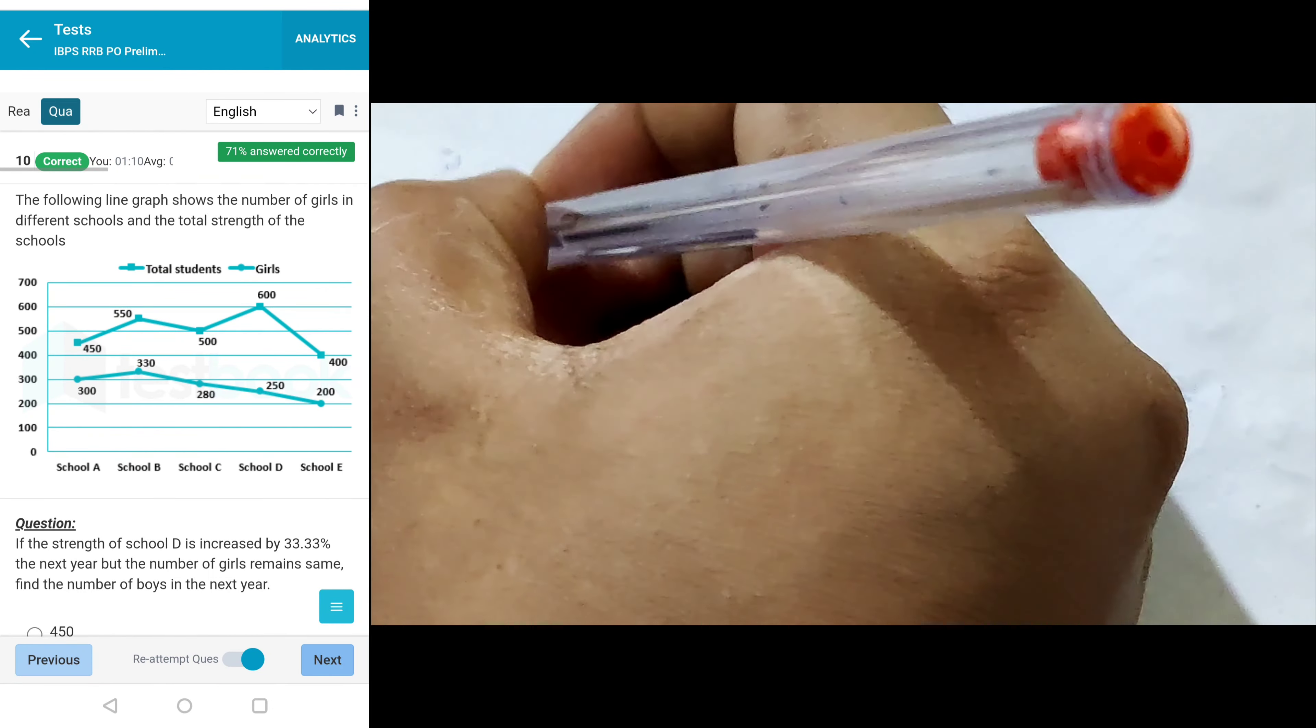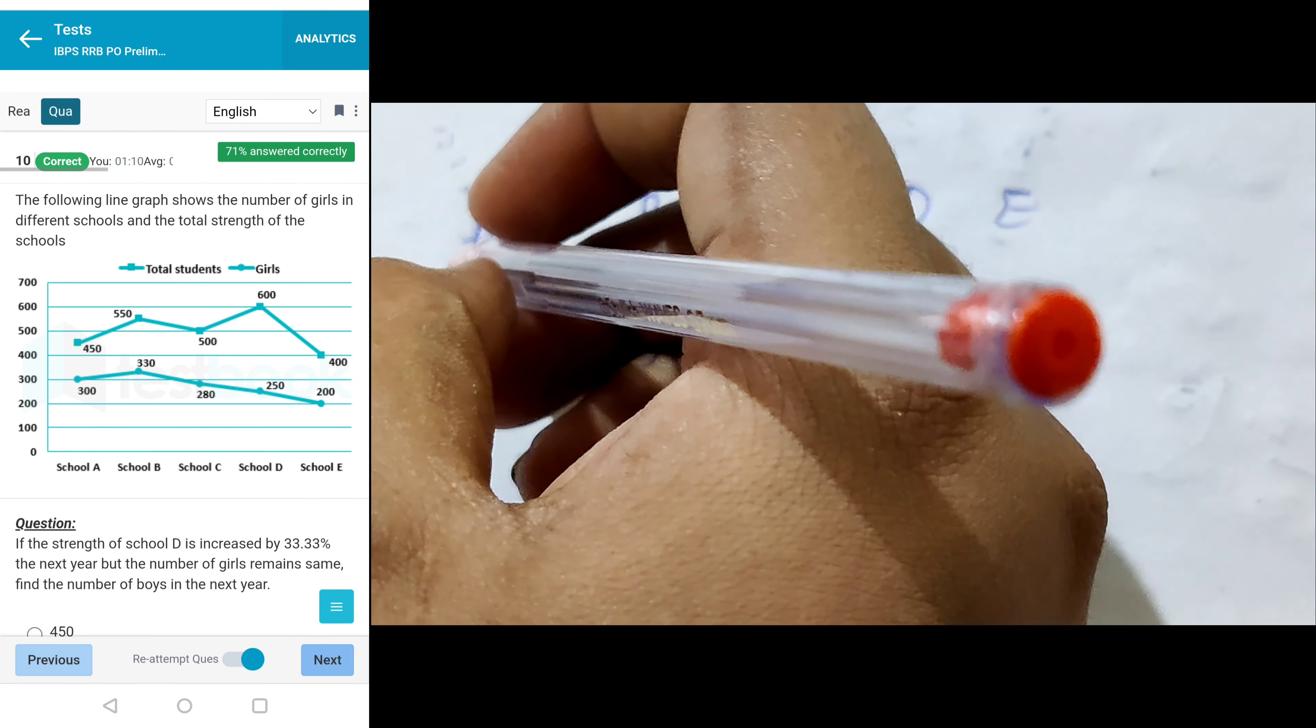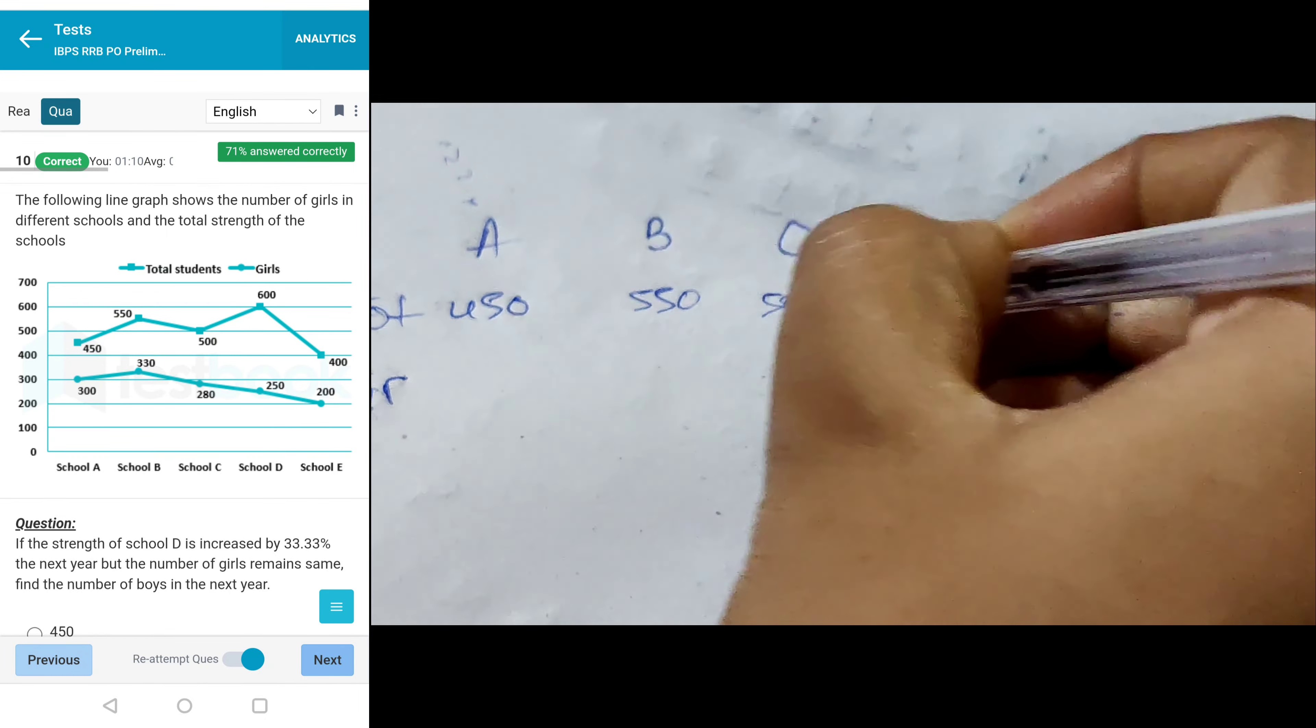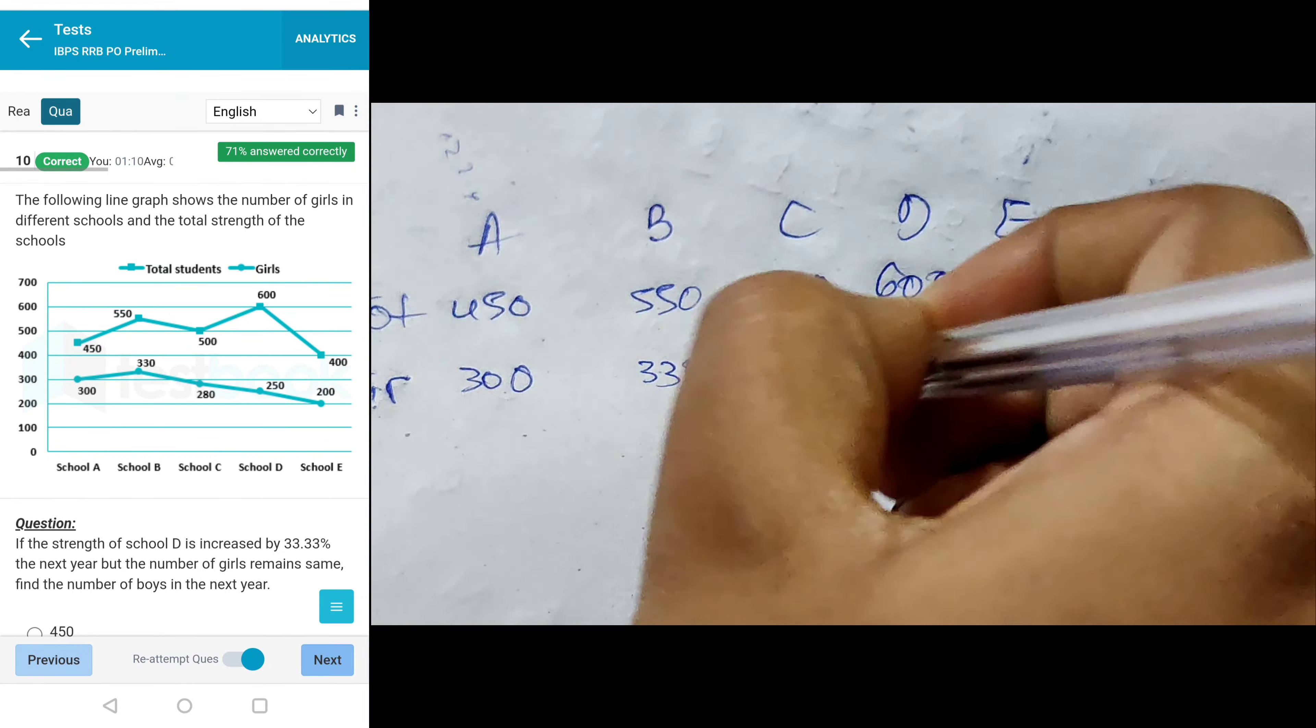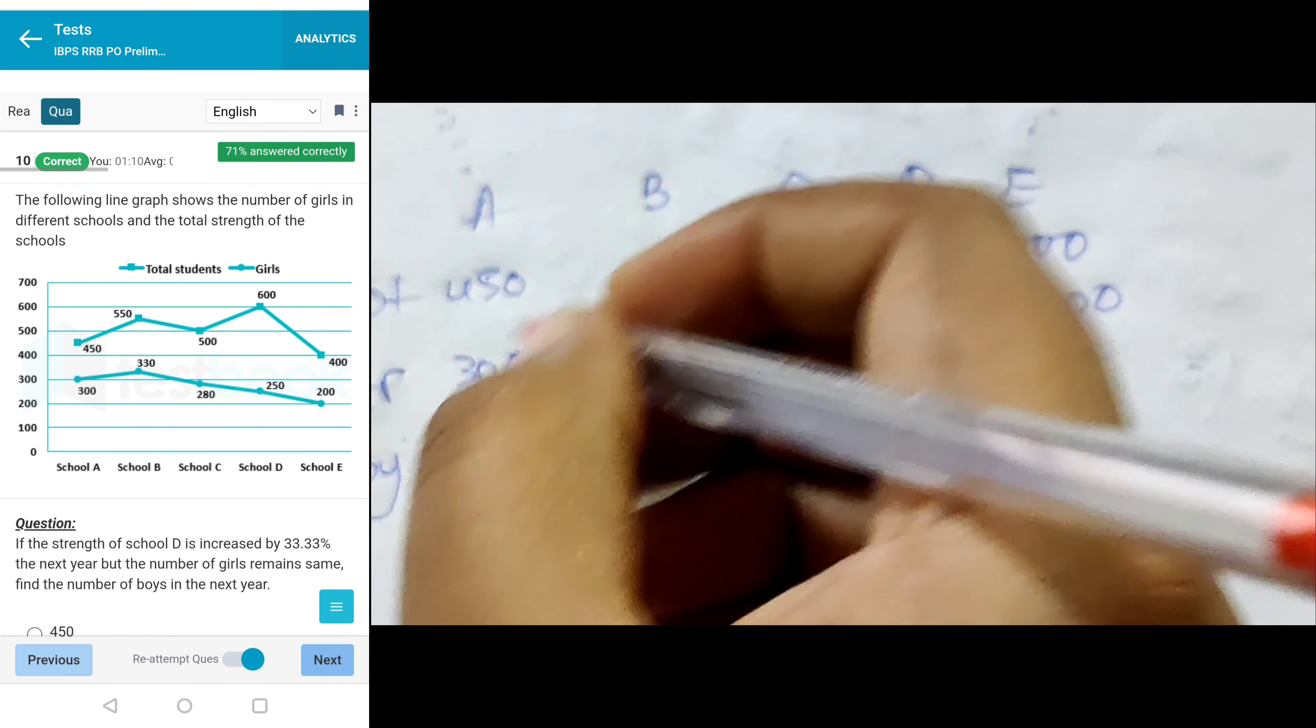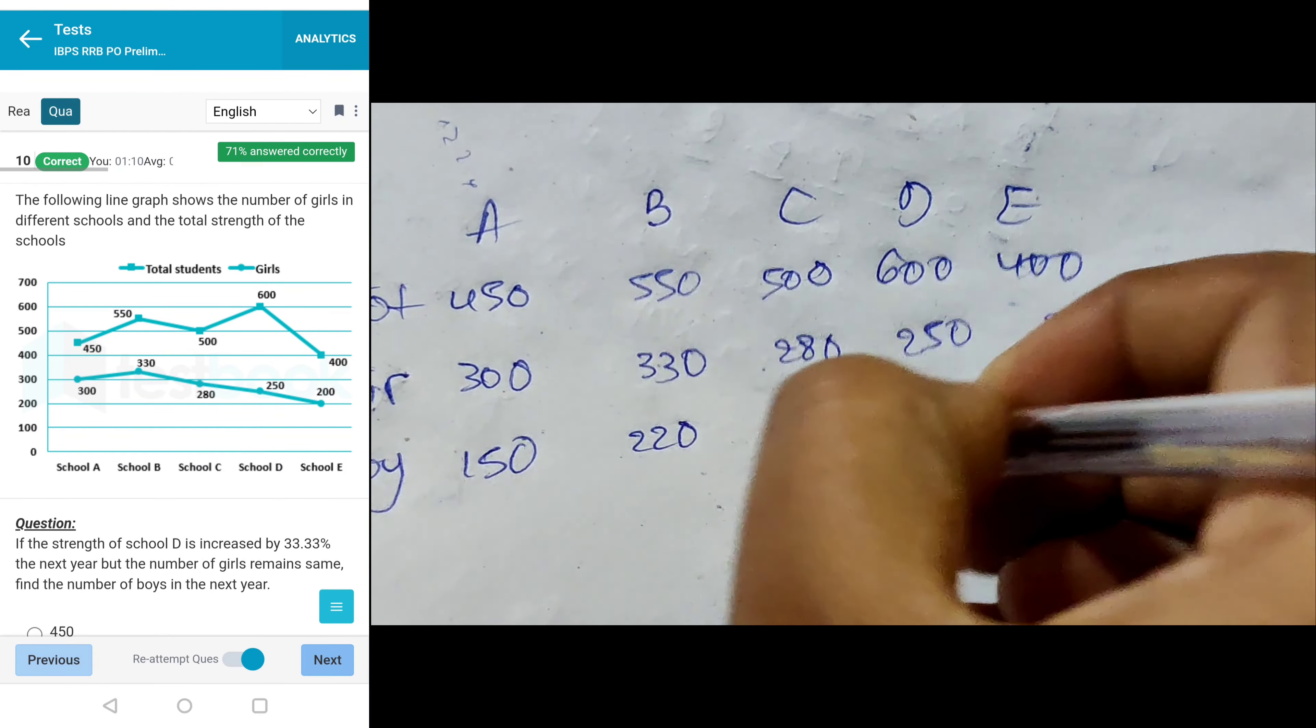That is A, B, C, D, E - five schools with total students and girls given. Rectangle represents total students: 450, 550, 500, 600, 400. Circle represents girls: 300, 330, 280, 250, and finally 200. For boys we subtract 450 minus 300, that's 150, then 220, and 220 again, 350, and 200.